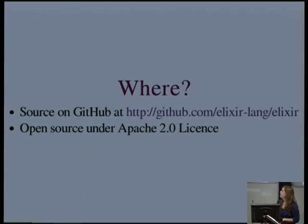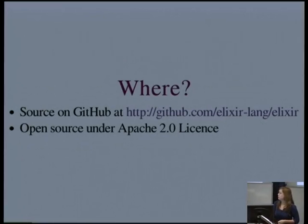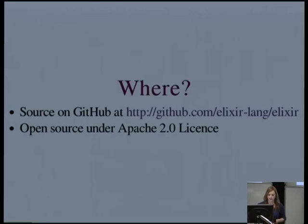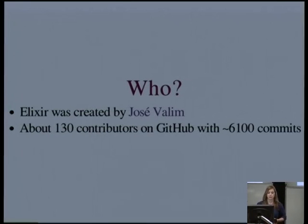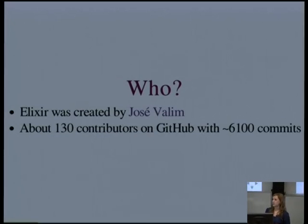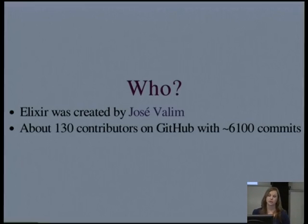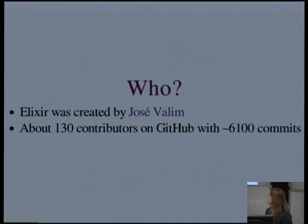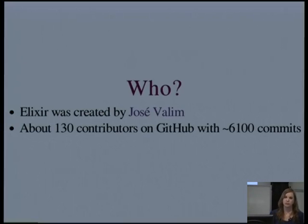Where can you find it? Not too many places in production just yet, although there are a few early adopters who are already using it in prod. But the source code is all on GitHub under an Apache license. Elixir was created by Jose Valim, who is well-known particularly in the Ruby community as a core committer on Rails, and also for his work on the Devise authentication gem. But these days, there's about 130 people who have contributed to Elixir on GitHub, with about 6,100 commits, and it's been forked about 270 times.